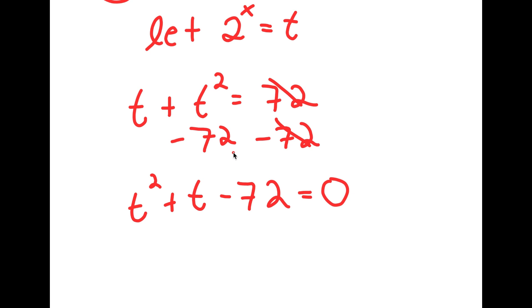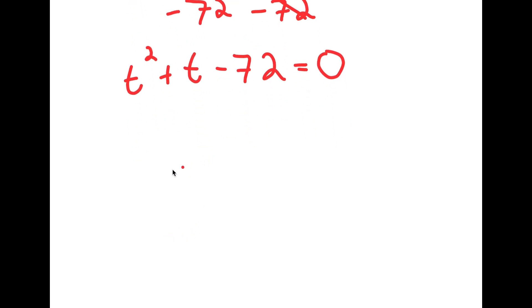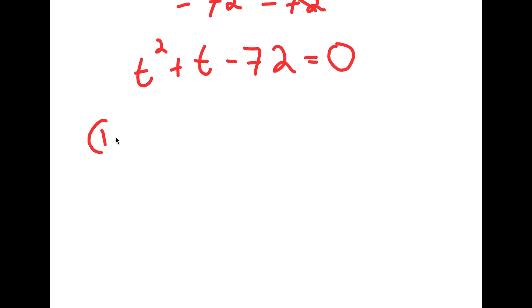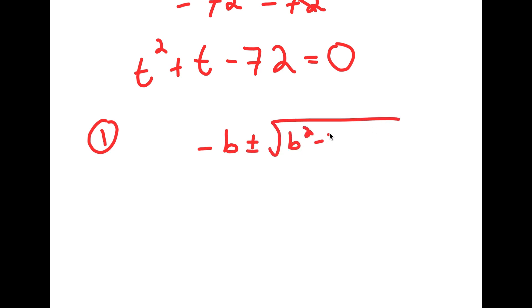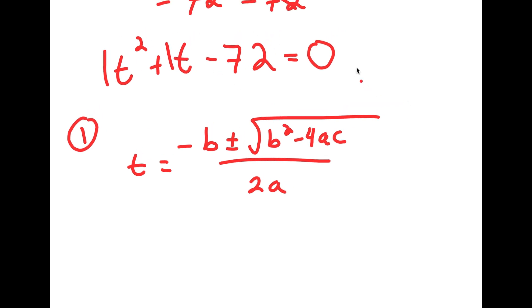Now I want to factor this to find the value of t. I can do this in two ways. The first method is using the quadratic formula: negative b plus or minus the square root of b squared minus 4ac, all over 2a. In this case, a is 1, b is 1, and c is negative 72.